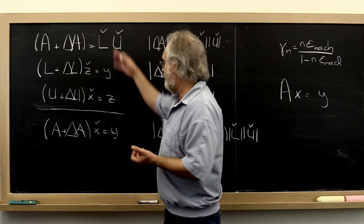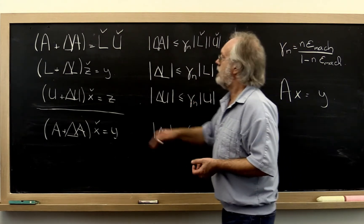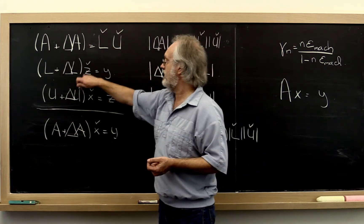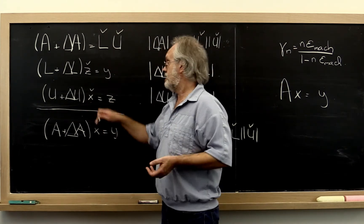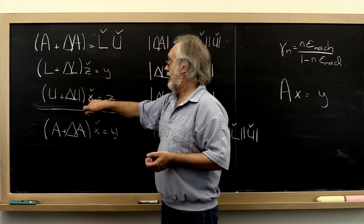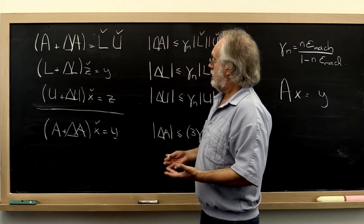If you put these results together, because error that happens here propagates into error that actually happens to accumulate in z and in x, you end up with a backward error analysis.